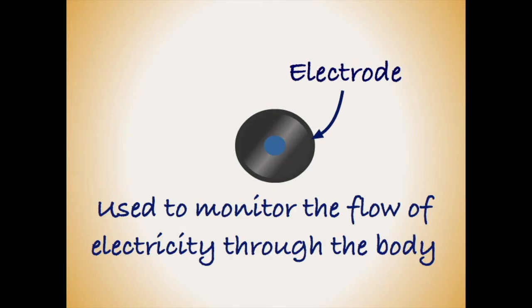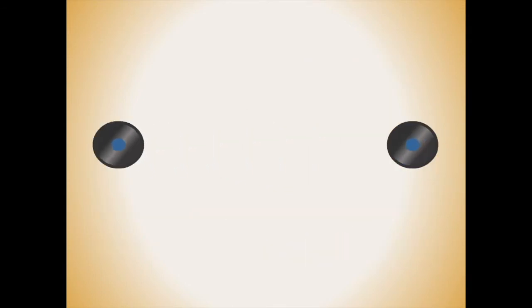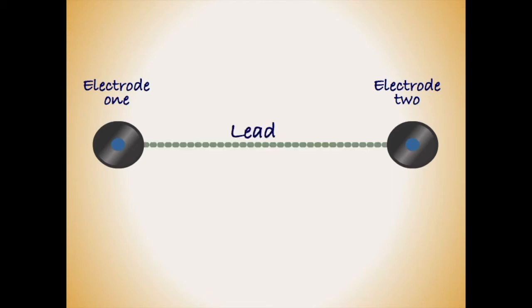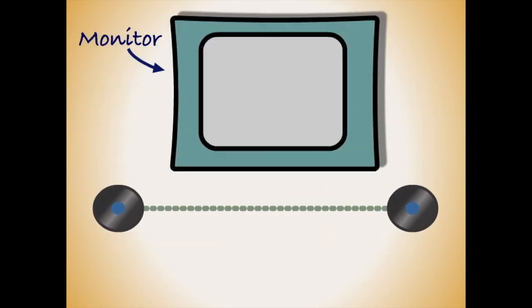In medicine, electrodes are used to detect the flow of electricity through the body. Two electrodes placed next to one another will produce a lead, an imaginary line between the two electrodes. Using a monitor we can observe the flow of electricity along the lead.